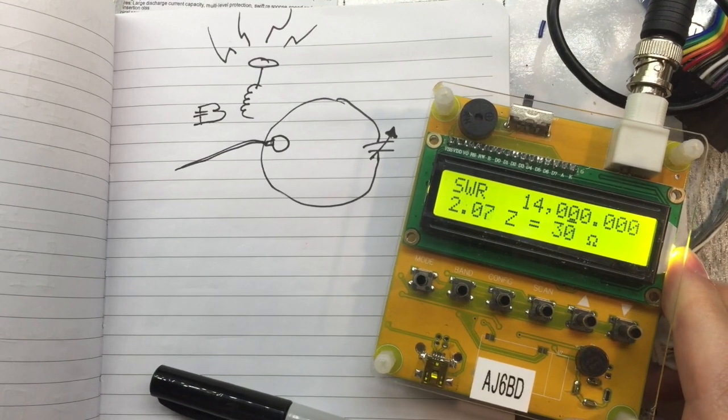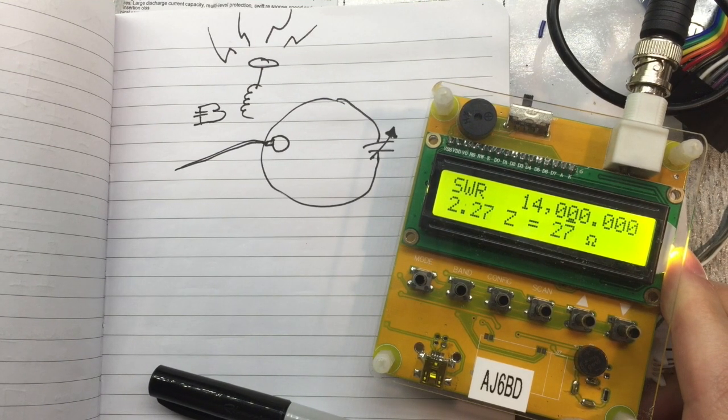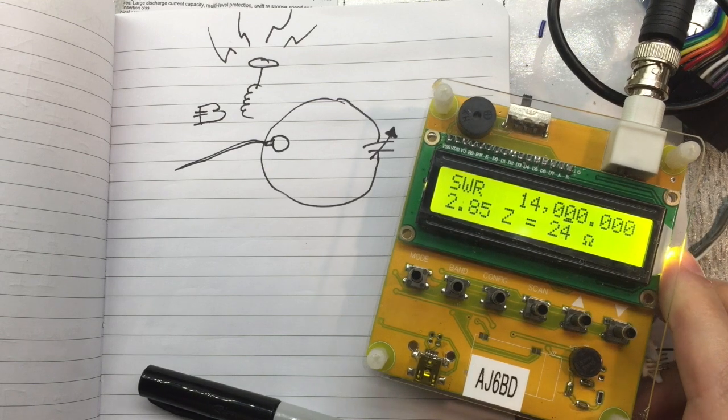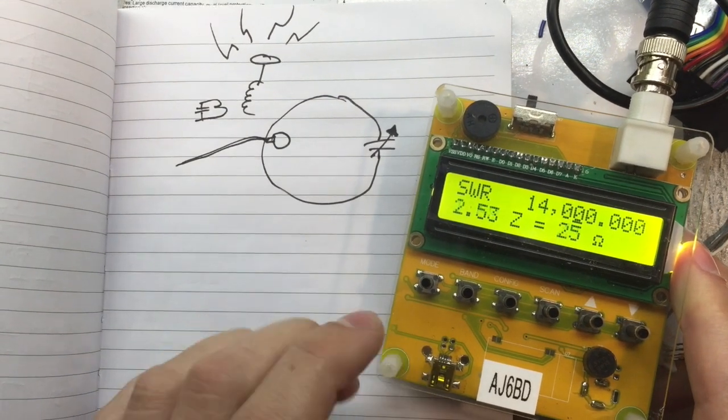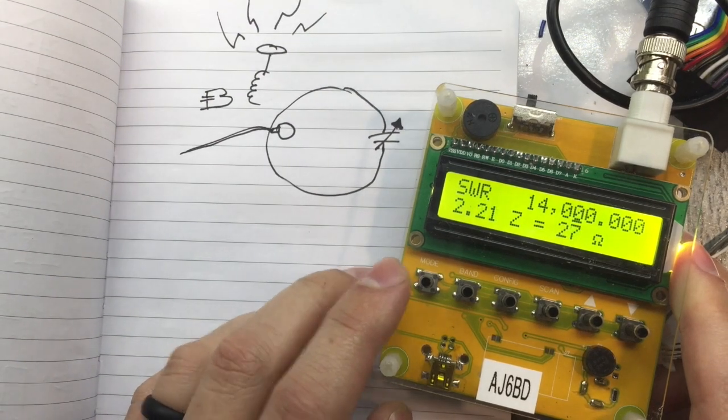Okay, this is about the closest I've got it. SWR 2.06. Oh, there it goes, 1.9. It's bouncing around a lot. But it's still not where I would have thought I would have been able to get it to, especially in a controlled environment like this.